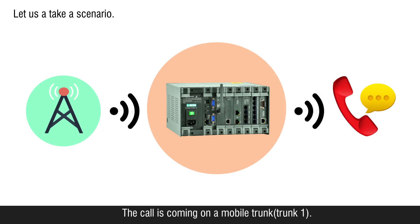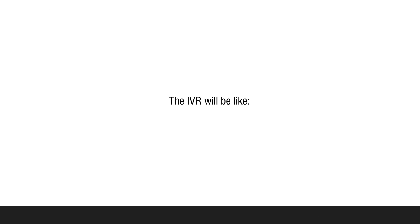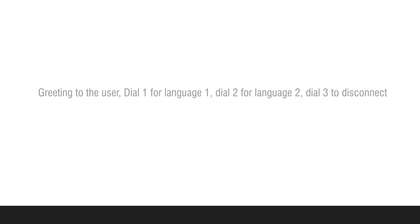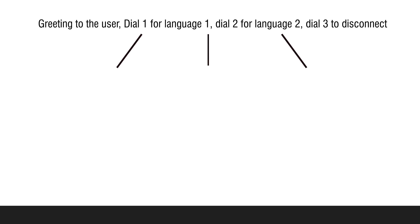Let us take a scenario. The call is coming on a mobile trunk. The call will be attended by auto answer and IVR will be provided to the caller. The IVR will greet the user: dial 1 for language 1, dial 2 for language 2, dial 3 to disconnect.